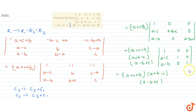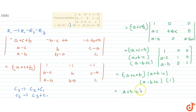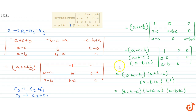Hence we get (a+b-c)(b+c-a)(a-b+c), and this equals our right hand side. Hence our question is proved.